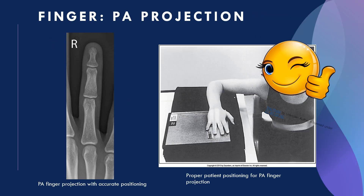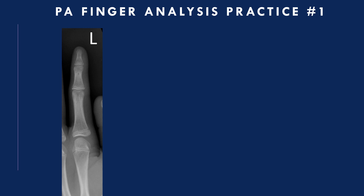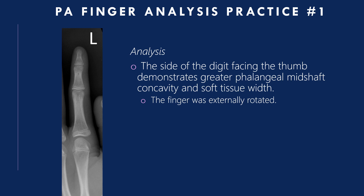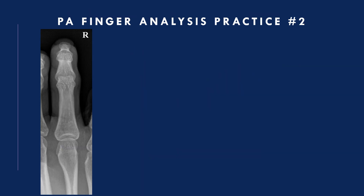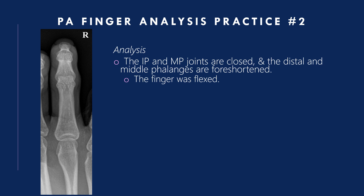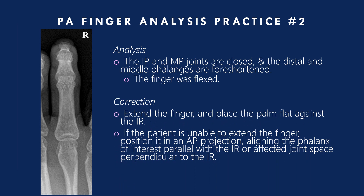For the PA finger projection, here is a picture of positioning. Analysis practice one: the side of the digit facing the thumb demonstrates greater phalangeal mid-shaft concavity and soft tissue width — the finger was externally rotated. Correction: internally rotate the finger, placing it flat against the IR. Analysis practice two: the IP and MP joints are closed and the distal and middle phalanges are foreshortened — the finger was flexed. Correction: extend the finger and place the palm flat against the IR. If unable, an AP projection may be needed, aligning the phalanx parallel with the IR or the affected joint space perpendicular to the IR.